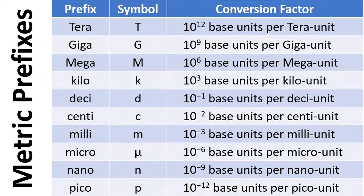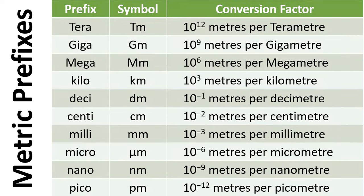Now if we look at the metric prefixes, there are a number of different prefixes that get used, and here is an example of some of them. With the prefix, so for example Tera with a capital T, that is 10 to the 12 base units per tera unit. It's a bit easier if we look at these with examples, so for example with metres.